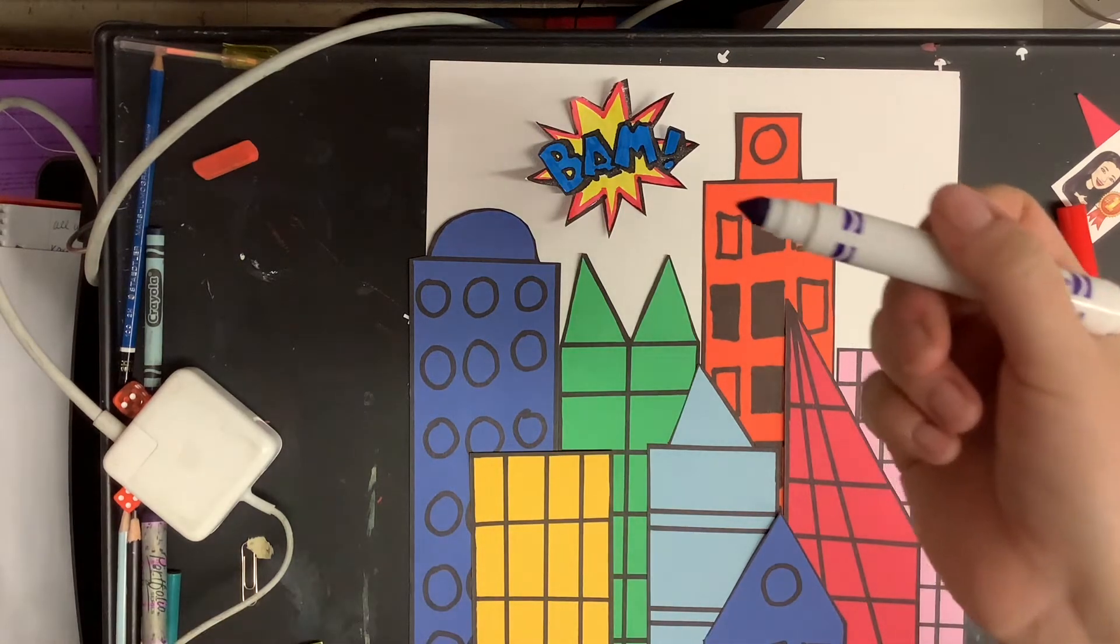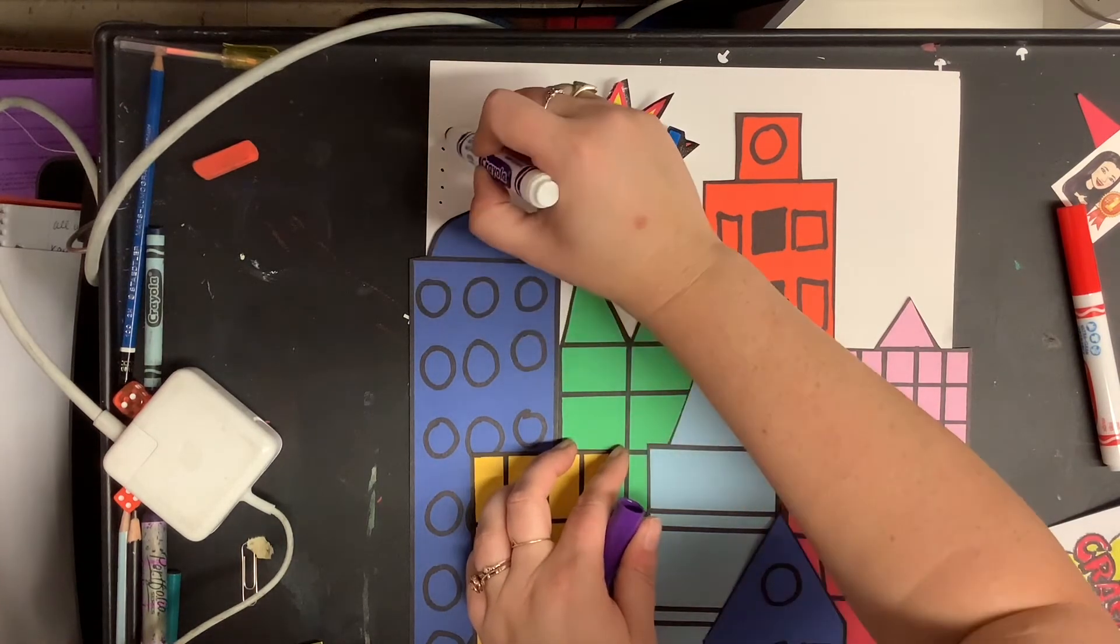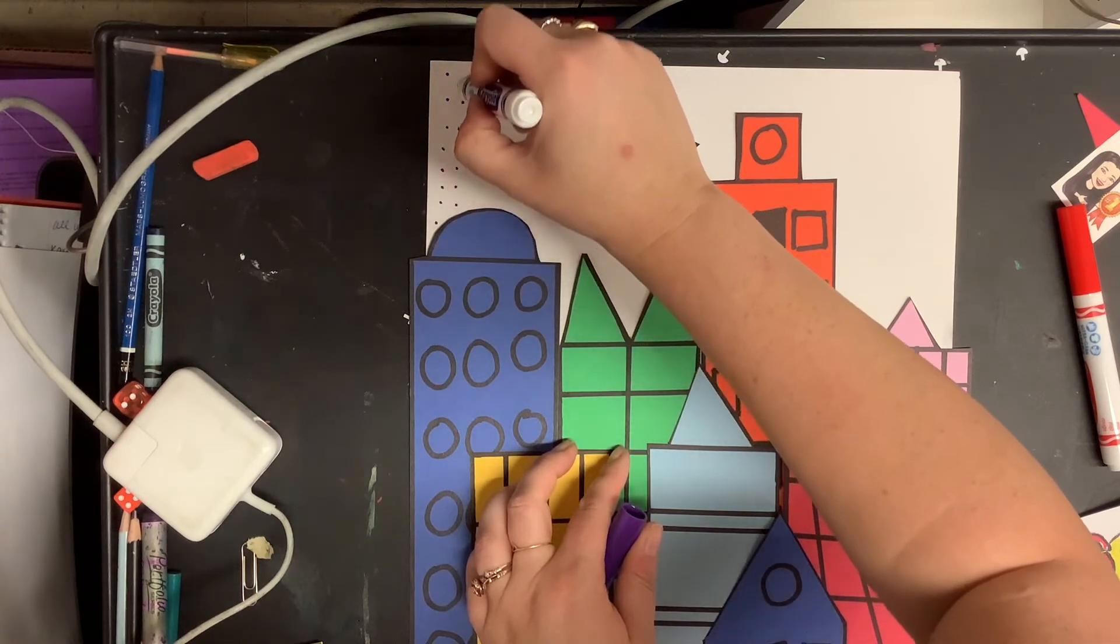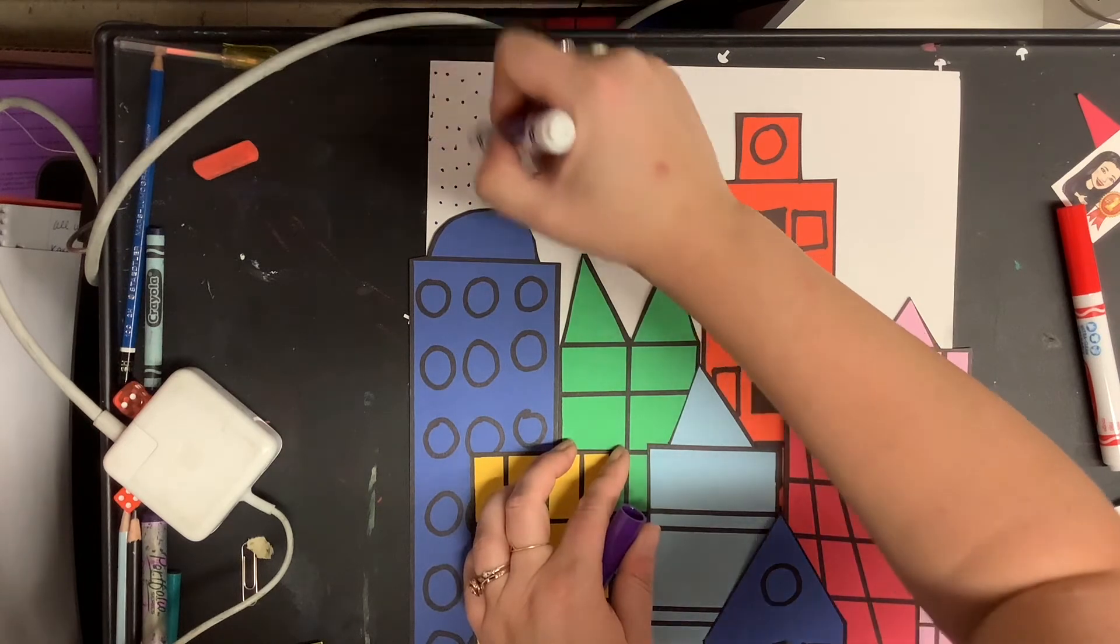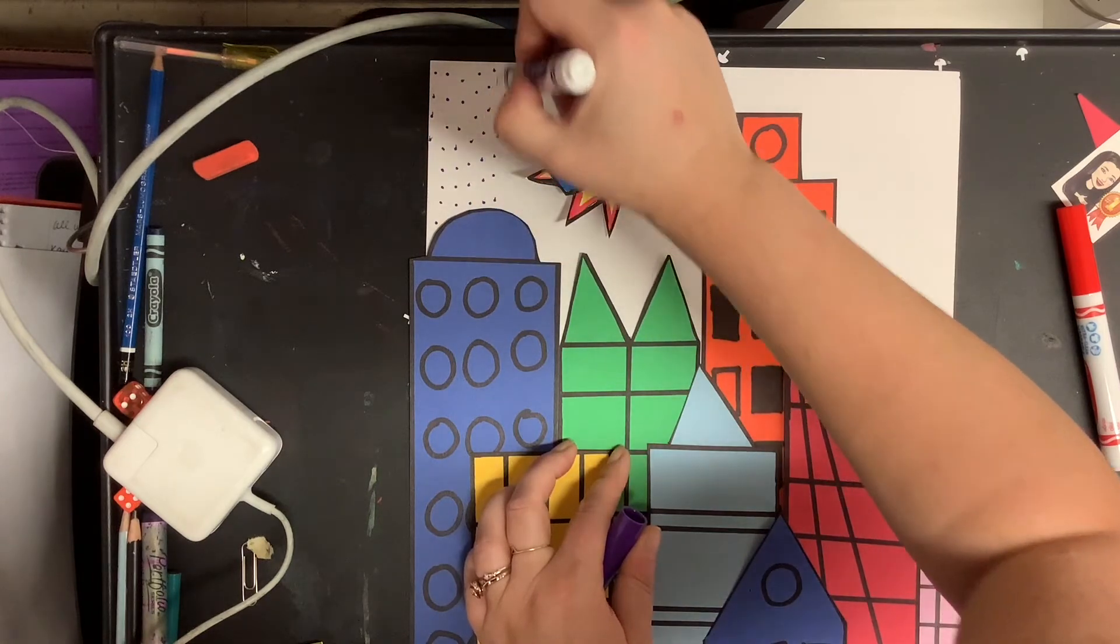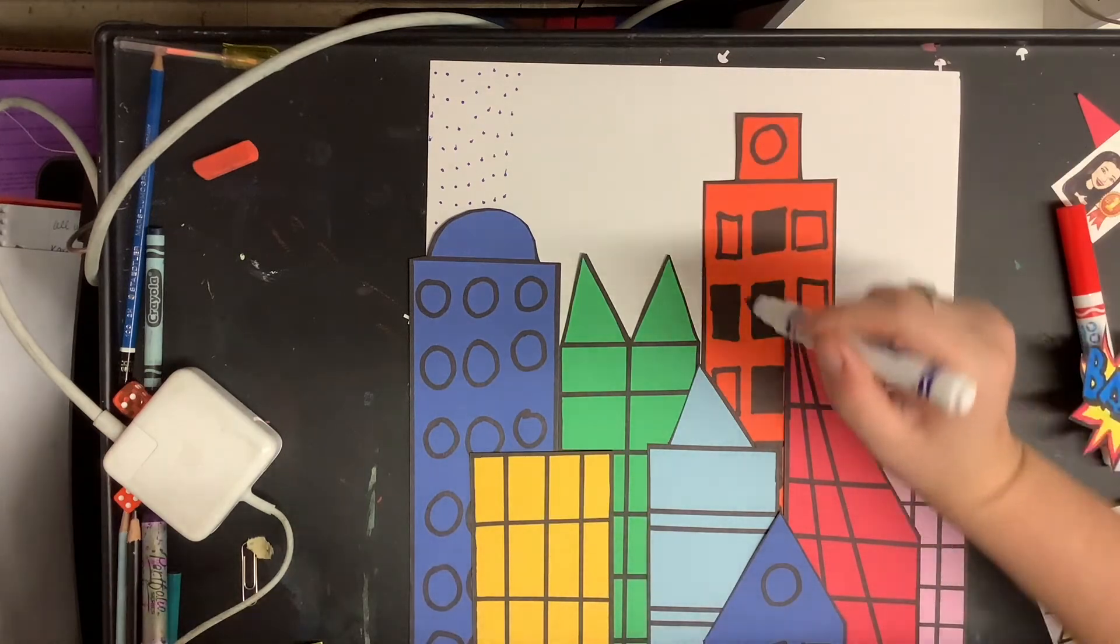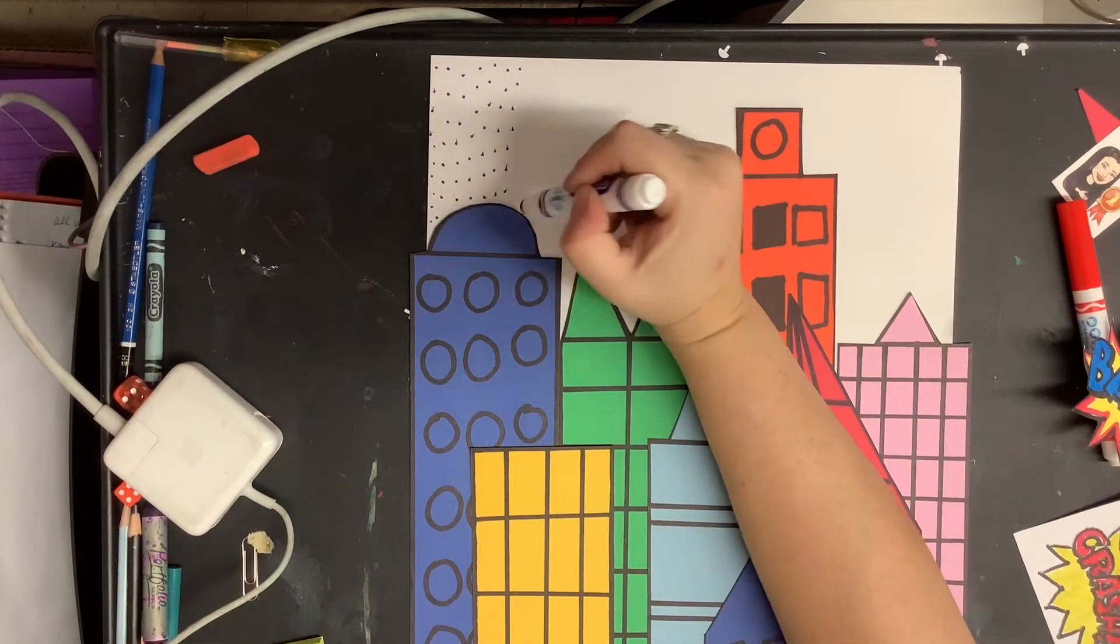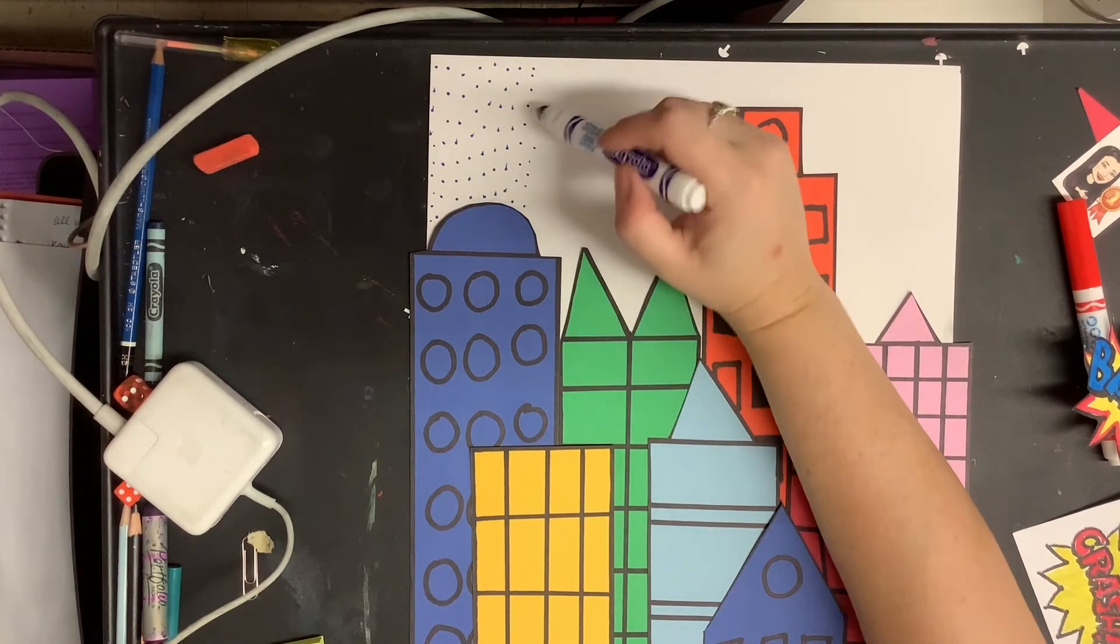And I'm gonna use purple marker for mine and I'm just gonna add in some comic book dots. These actually do have a name they're called Ben Day dots because the comic artist Ben Day B-E-N space D-A-Y invented them and it was just a way that comic book artists figured out that they could color in their comics without using a bunch of ink. They would just print them with dots.